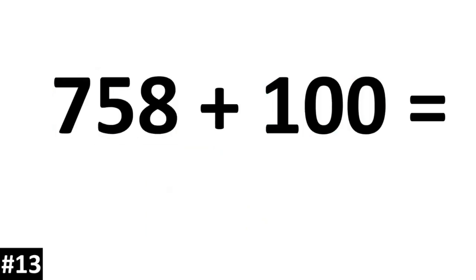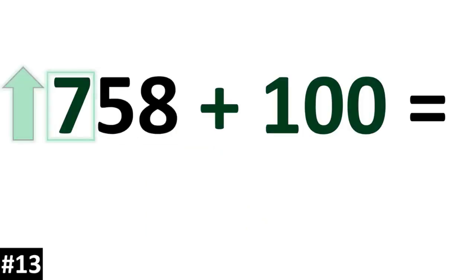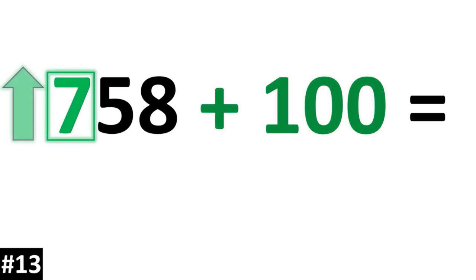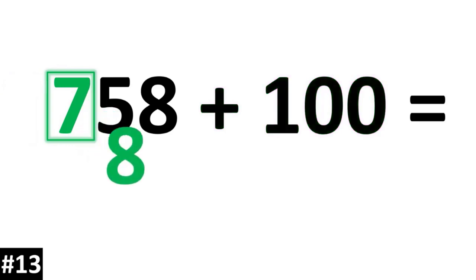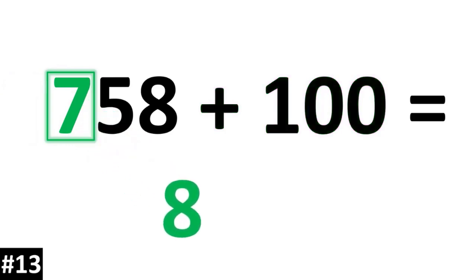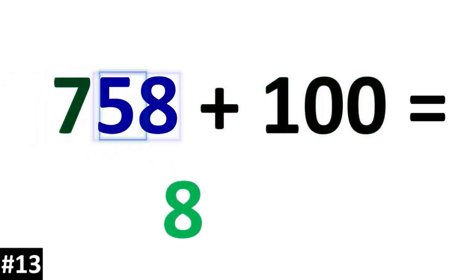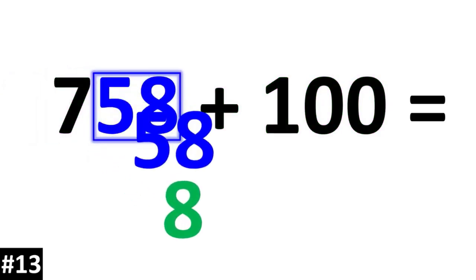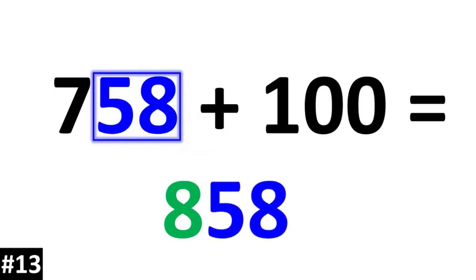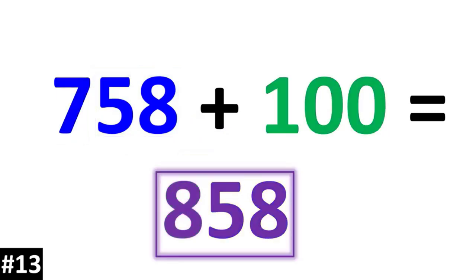758 plus 100. The hundreds digit of 7 goes up by 1, so that 7 becomes an 8. The other numbers stay the same, so we bring down the 58: 858.